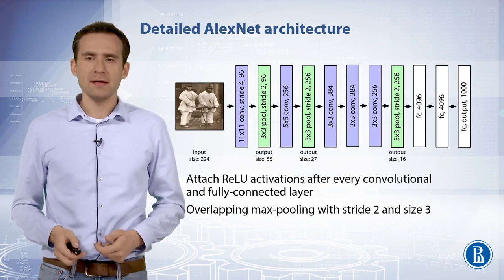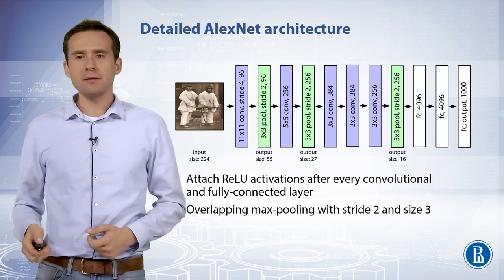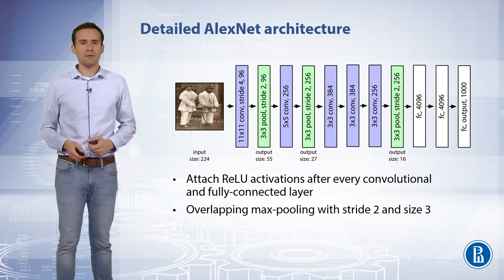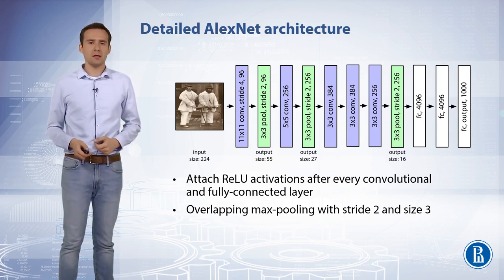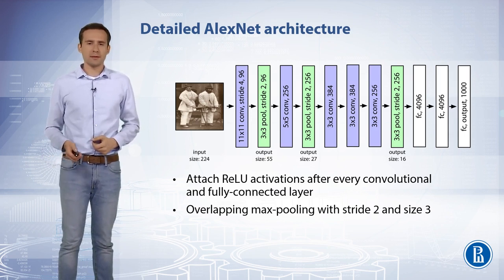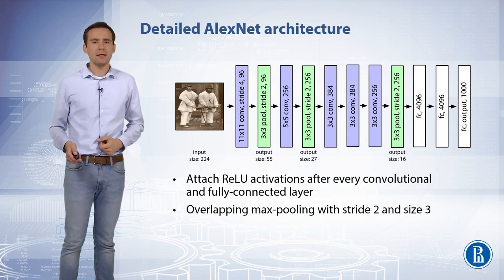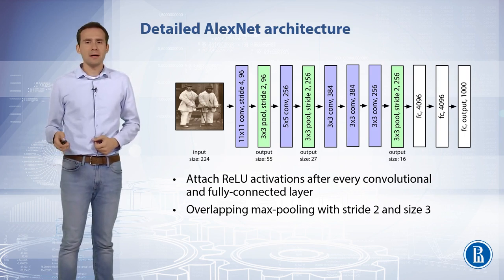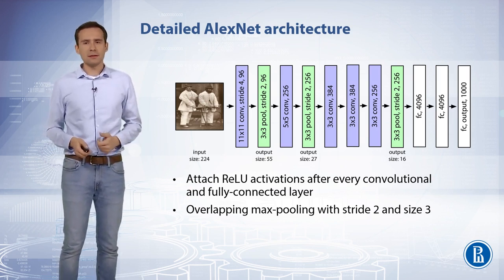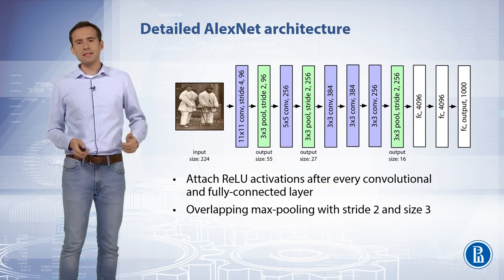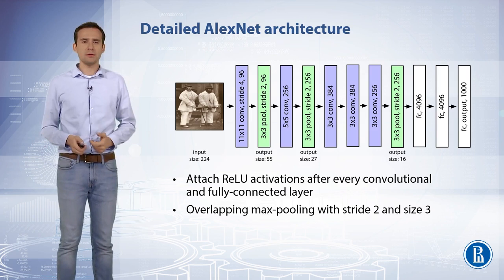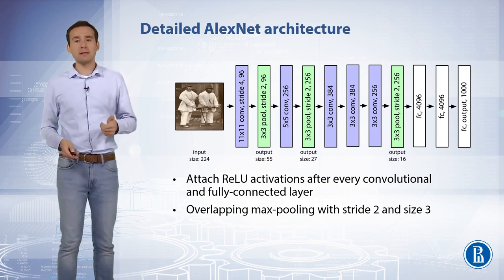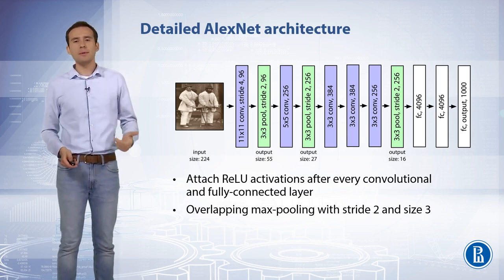AlexNet consists of 8 hidden weight layers: 5 convolutional layers used as a feature extractor and 3 fully connected layers used as a classifier. The first convolutional layer filters the 224x224x3 input image with 96 kernels of size 11x11x3 with a stride of 4 pixels. The second convolutional layer takes as input the output of the first and filters it with 256 kernels of size 5x5x48. Between the first and second convolutional layers, max pooling and normalization operations add shift invariance and numerically stabilized learning, respectively.